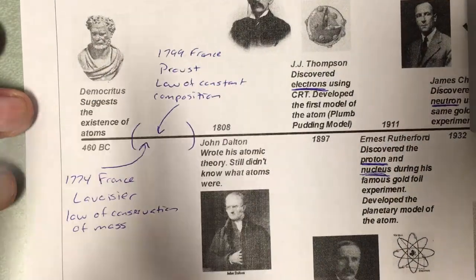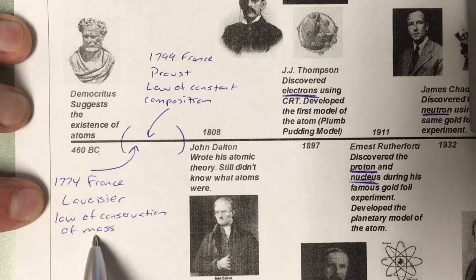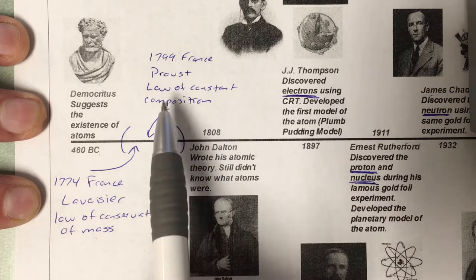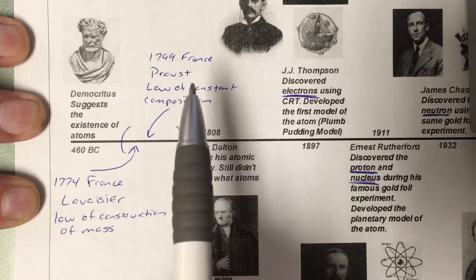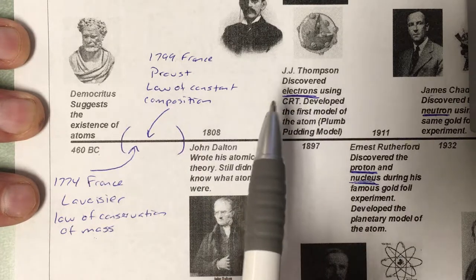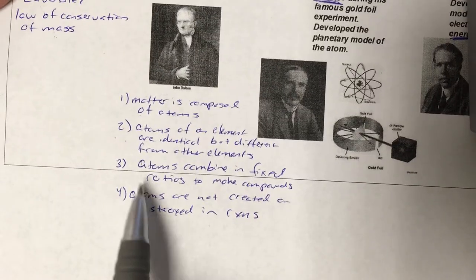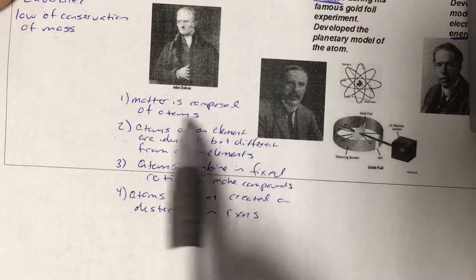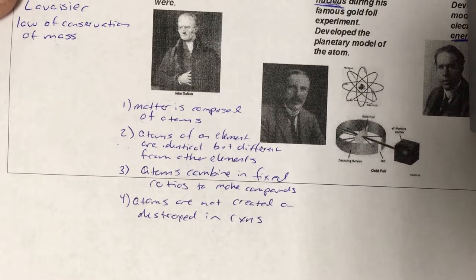So what do you need to know? Democritus was the first person to come up with the idea of the atom. Lavoisier came up with the law of conservation of mass — mass in a chemical reaction never changes. Proust's law of constant composition says the ratio of elements by mass is always the same in a compound no matter where it comes from — so carbon dioxide from exhaled breath, dry ice, or burning all have the same percent composition. Dalton comes up with the first atomic theory, combining Democritus, Lavoisier, and Proust's ideas with his own. He's considered the father of modern chemistry because it shifted chemistry's focus toward atoms.